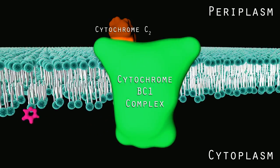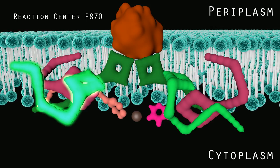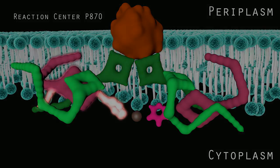The quinone then passes the electron to a cytochrome BC1 complex, then cytochrome C2 which finally returns the electron to the reaction center to recycle the sequence.